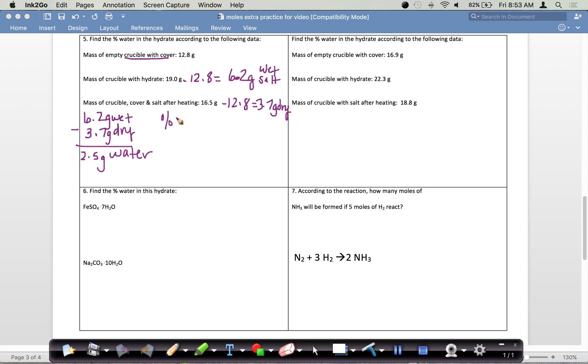Remember, we're going to do wet salt minus dry salt to find out the mass of the water lost. When you do that on the calculator, you get 2.5 grams of water lost. For our hydrates, we're always going to do percent equals water over wet salt times 100, so we do 2.5 grams over 6.2 grams times 100, and in this case we got 40 percent.